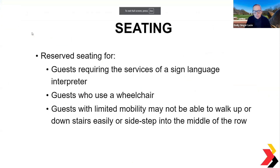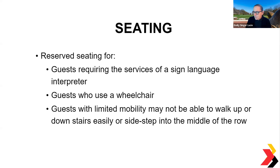Regarding seating: if you have an interpreter, reserve seating so people who need the interpreter can sit up front within clear line of sight. Make sure there are spaces for wheelchairs. In a stadium or auditorium, guests with limited mobility may not be able to walk up or down stairs easily, so mark seats available at the top or near the entrance so they only have to walk down one step in the aisles. If there is a presenter doing a meet-and-greet afterward, make sure that is in an accessible location so anyone with a wheelchair or limited mobility can also reach the presenter.